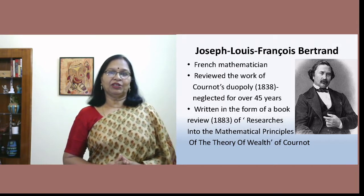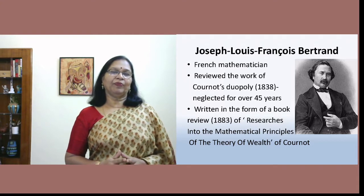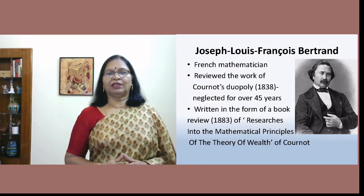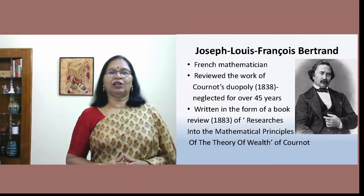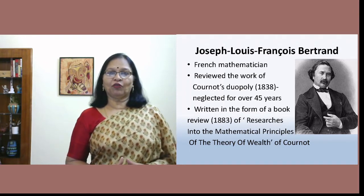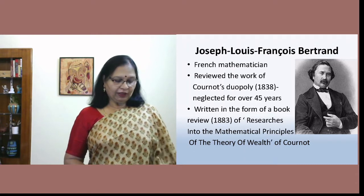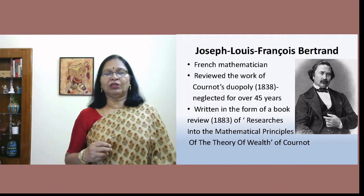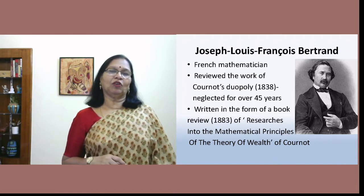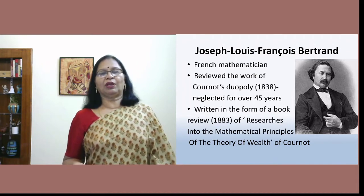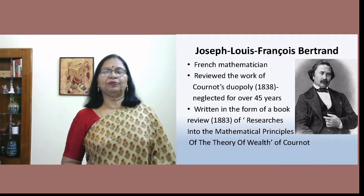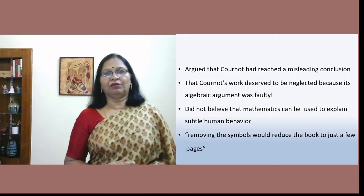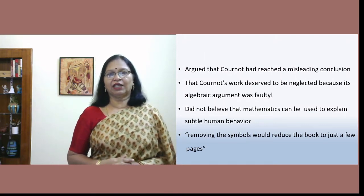This writing of Bertrand in 1883 led to a change in the way we understand Cournot's idea about output, which remained in vogue for about 45 years. So this is a review — it is not something written originally. Since he reviewed the work of Cournot, that is what came to be known as the Bertrand model. Being a French mathematician, he was very critical of Cournot's use of mathematics in understanding the behavior of the two firms.